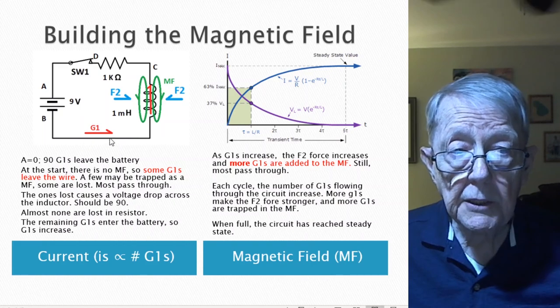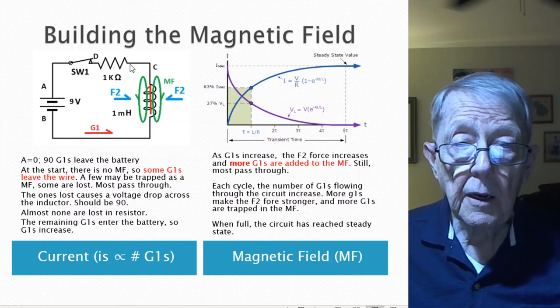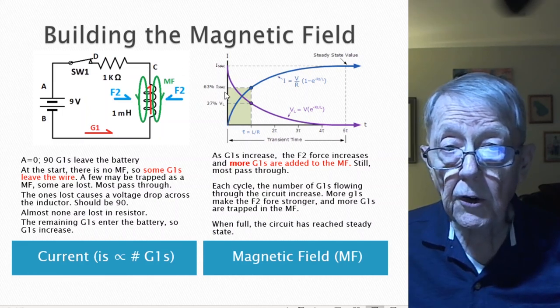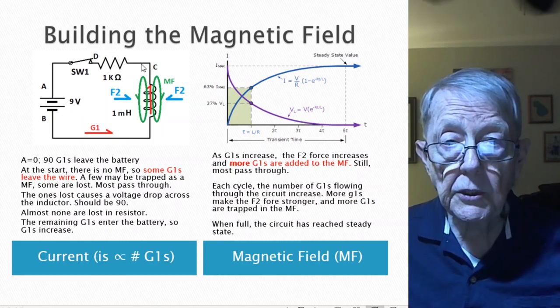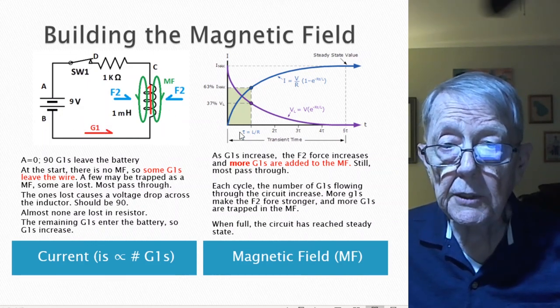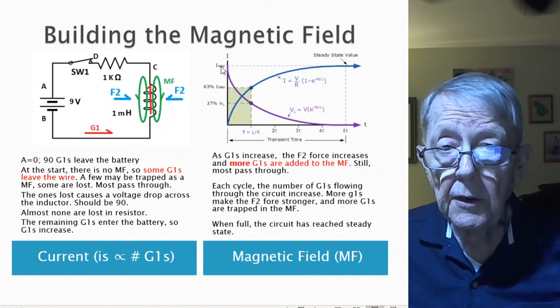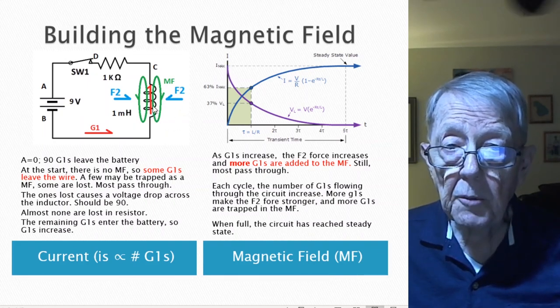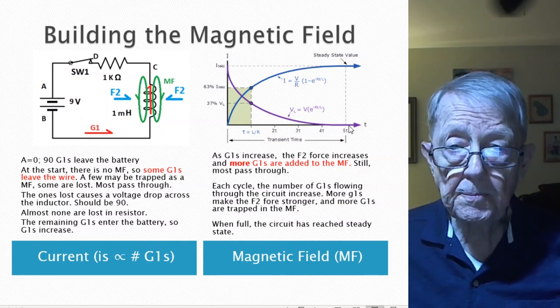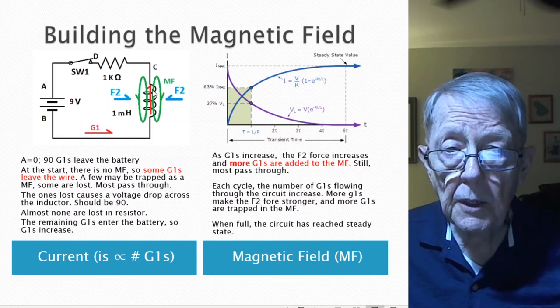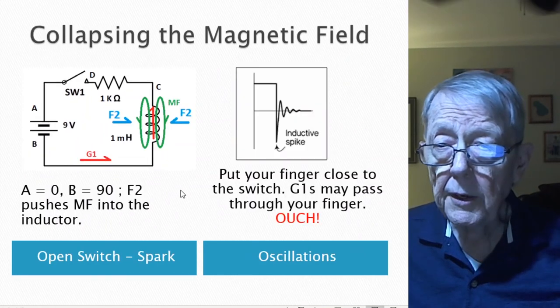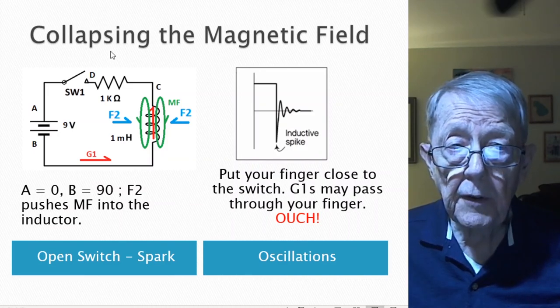At the very beginning, almost none are lost in the resistor, but as G1s increase, this builds up. You get a bigger and bigger loss through here, which means the current through that resistor is going to get bigger and bigger, because the current is directly related to how many G1s are entering the resistor. And whatever's left entered the battery. You add 90 and it keeps increasing and increasing, so the current keeps increasing. And you have the most loss at the beginning, and then it dies until it's full when the magnetic field is full. All of the G1s pass through because there's no room, and the force is very strong.